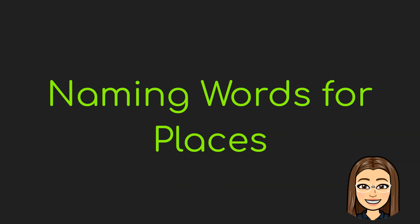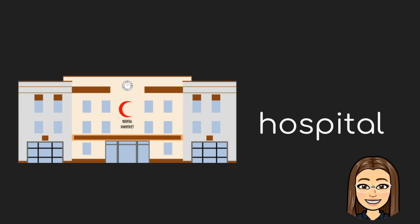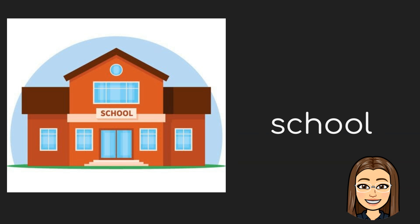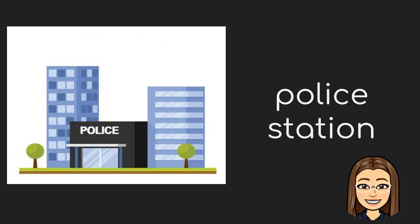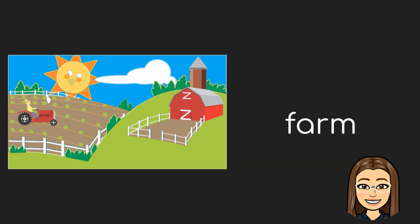Let's now talk about naming words for places. First, we have here a hospital. Next is a school. We also have here a police station. And last, we have a farm.